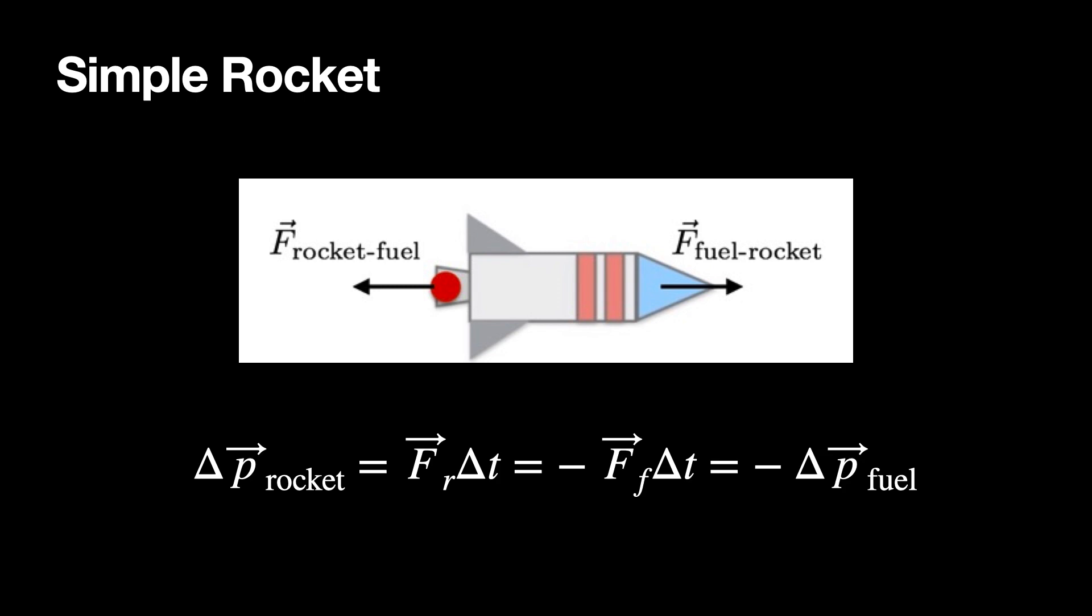So with that, the change of momentum of the rocket is just the force on the fuel times delta t, or that's also the negative the force on the fuel times delta t. They're the same forces at the same time. So we get the change momentum of the rocket is negative the change momentum of the fuel. So it's just conservation momentum. And that works, that's cool, everyone's cool with that.